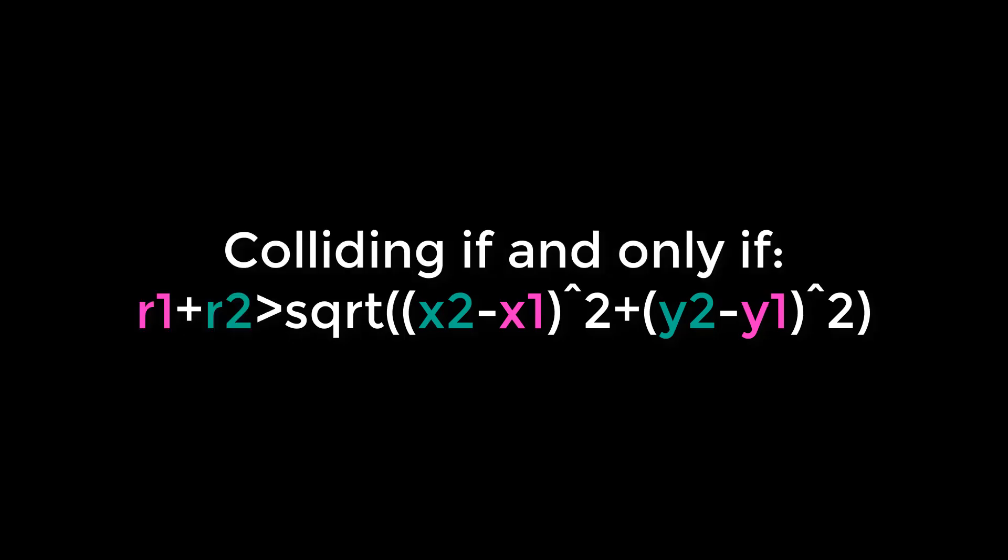And writing this out as a conditional statement, you have r1 plus r2 is greater than the square root of (x2-x1)^2 + (y2-y1)^2. And if that condition is true, the circles must be colliding. And if it's not true, the circles are not colliding.